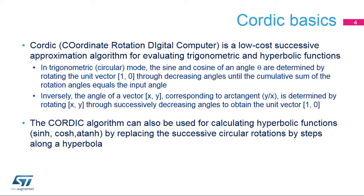Inversely, the angle of a vector (X, Y) corresponding to arc tangent of Y over X is determined by rotating vector (X, Y) through successively decreasing angles to obtain the unit vector (1, 0). The cumulative sum of the rotation angles gives the angle of the original vector. The Cordic algorithm can also be used for calculating hyperbolic functions like hyperbolic sine, hyperbolic cosine, or inverse hyperbolic tangent, by replacing the successive circular rotations by steps along a hyperbola.